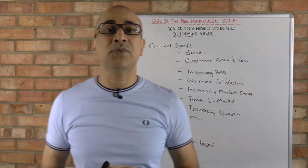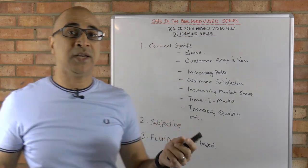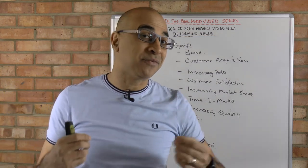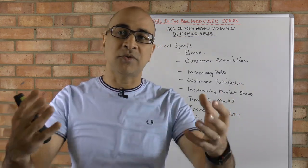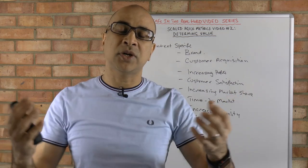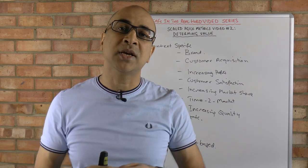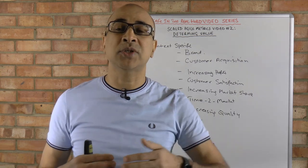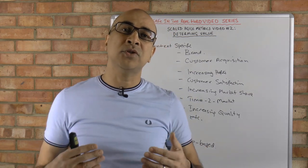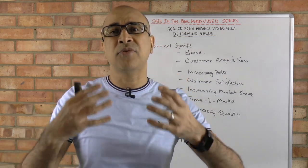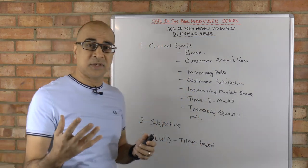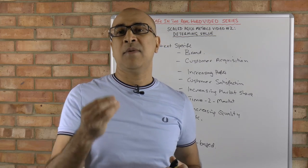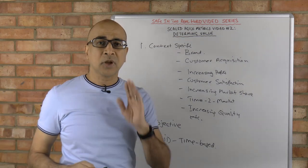So let's look at what we can do to solve these three key problems when determining value. The first one — context-specific — is relatively straightforward. You can hold a workshop with a group of key stakeholders from around the organization, project, or program depending on scope, and ask them what is most valuable in terms of your goals and objectives. Once you've done that, you want the group to come to a consensus on the top three to maximum five what I call value levers — the most important value elements that are going to move the needle for that program, project, or organization.